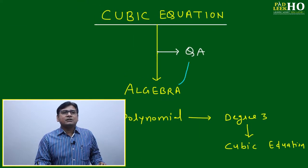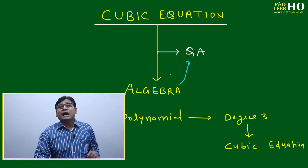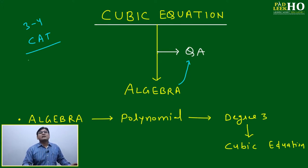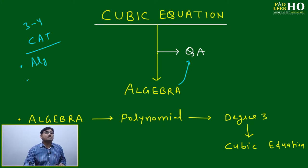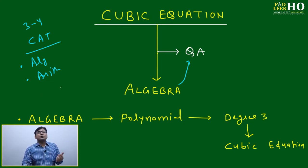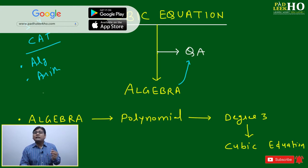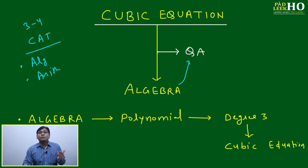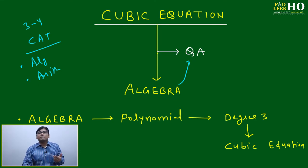This topic is part of algebra, and it will surely affect your quantitative ability preparation. In the last three to four years of CAT, these two topics — algebra and arithmetic — have been coming very frequently, and their weightage has increased. The number of questions from these two chapters has kept on increasing, so you can expect this trend to continue this year as well.